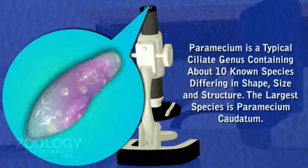Paramecium is a typical ciliate genus containing about ten known species differing in shape, size, and structure. The largest species is Paramecium caudatum.